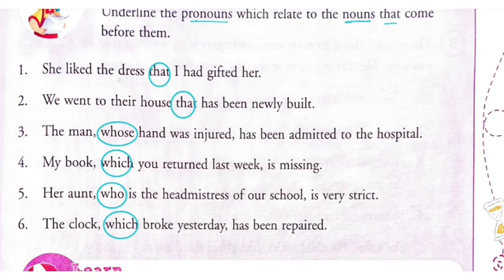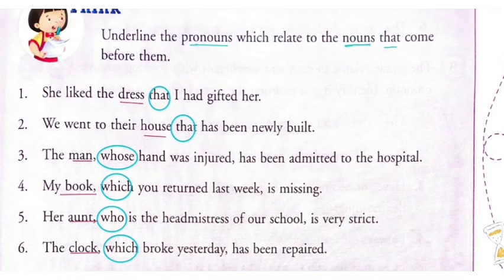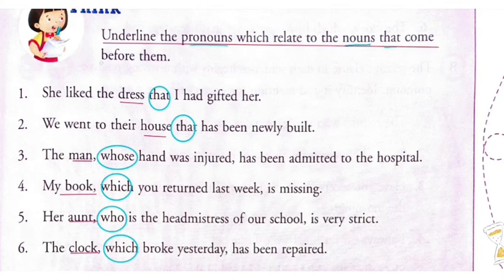Now let us look at the nouns. In every sentence, we have a noun before each pronoun: dress, house, man, book, aunt, and clock. As per the definition, underline the pronouns which relate to the noun that comes before them.